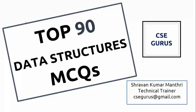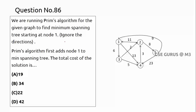Hello friends, welcome to our channel CSC Gurus. Coming to question number 86, we are running Prim's algorithm for the given graph to find the minimum spanning tree starting at node 1. Prim's algorithm is used to find the minimum cost spanning tree from a given graph. Here it is given: ignore the direction, so the directions given in the graph have to be ignored.